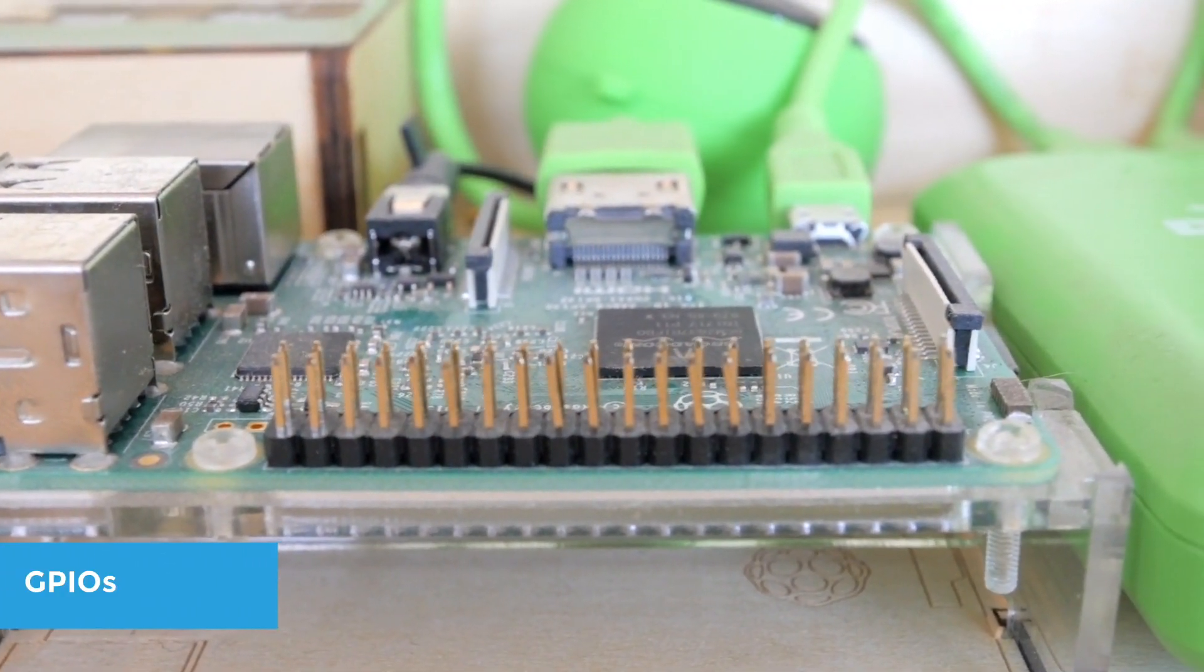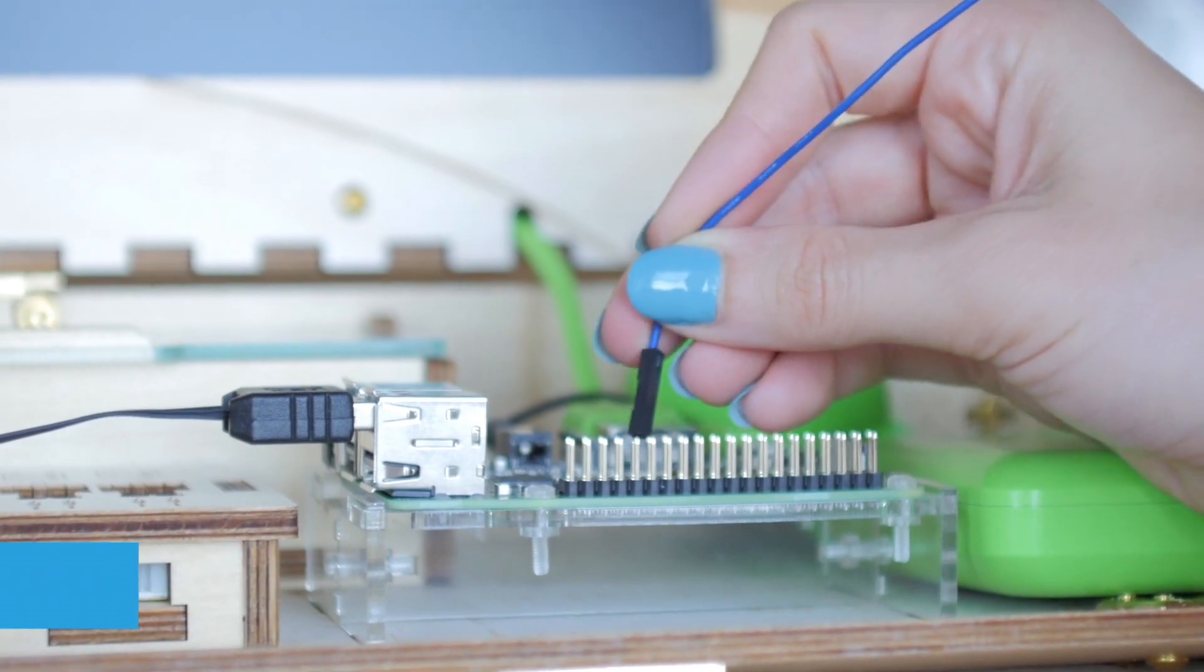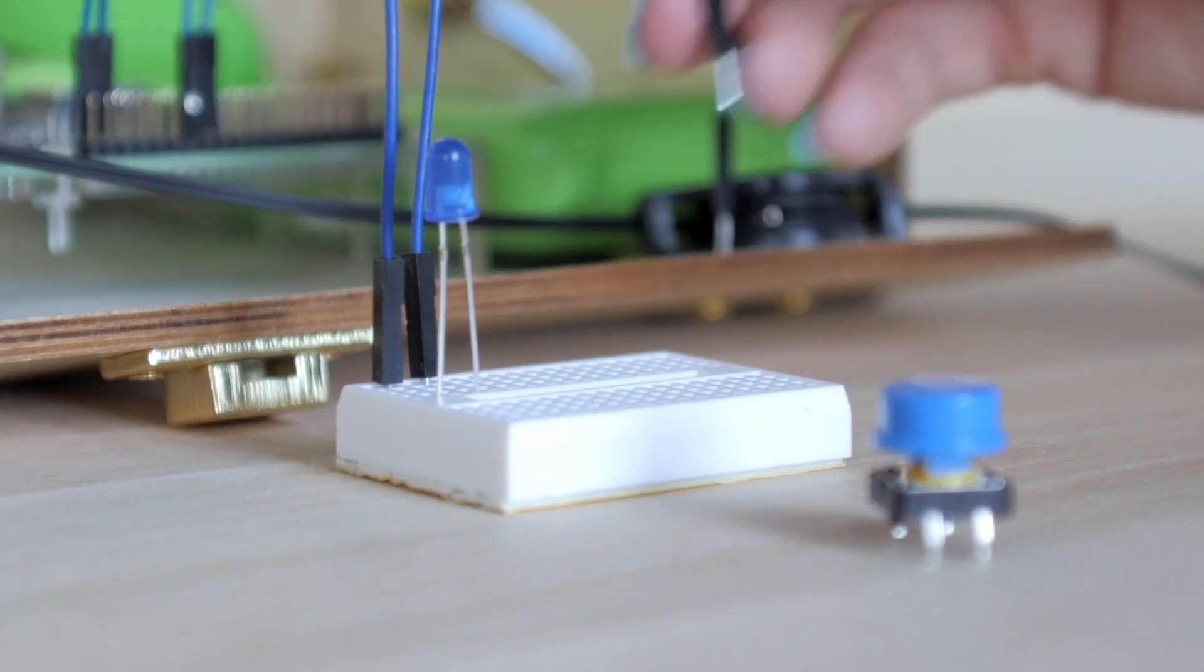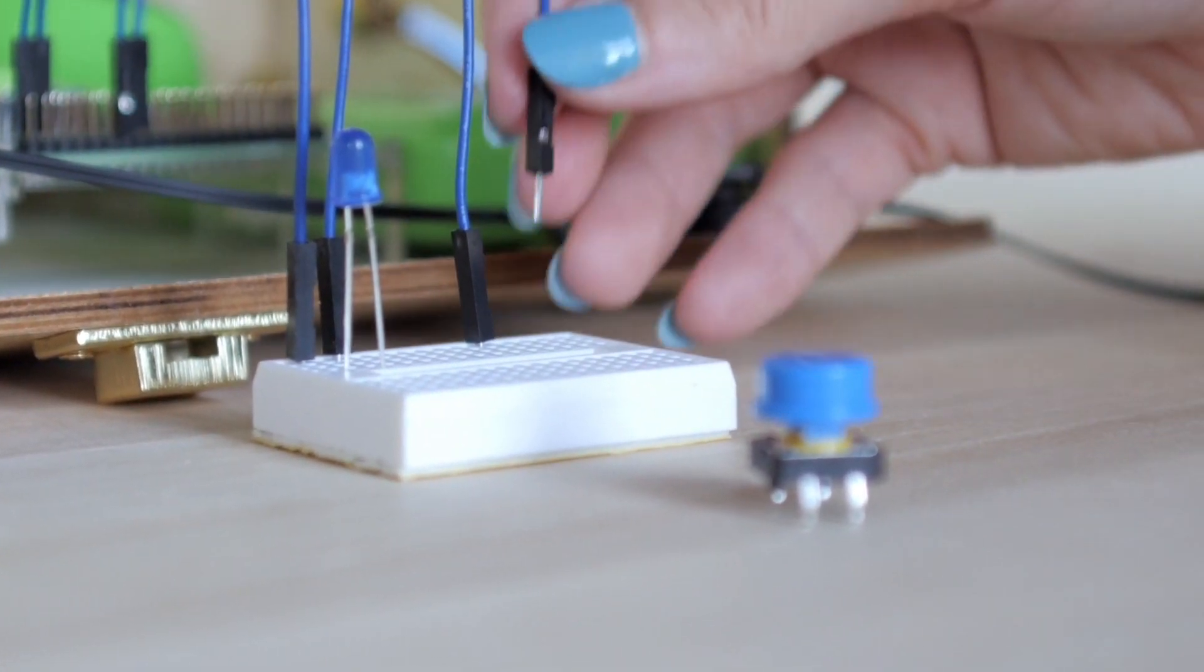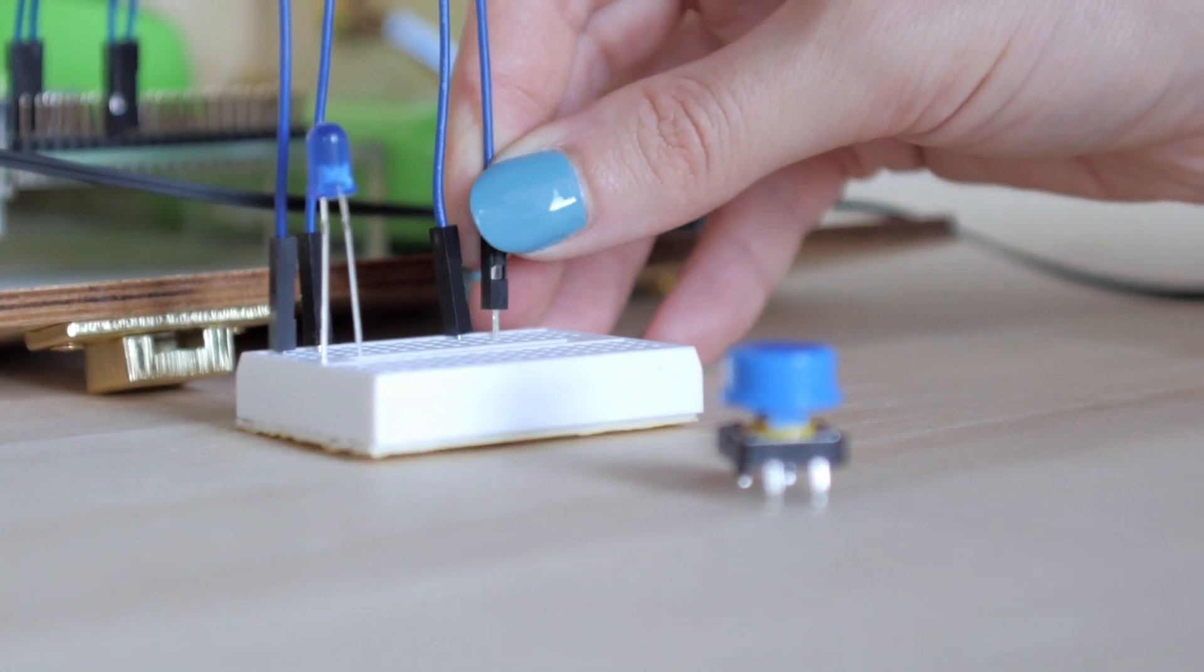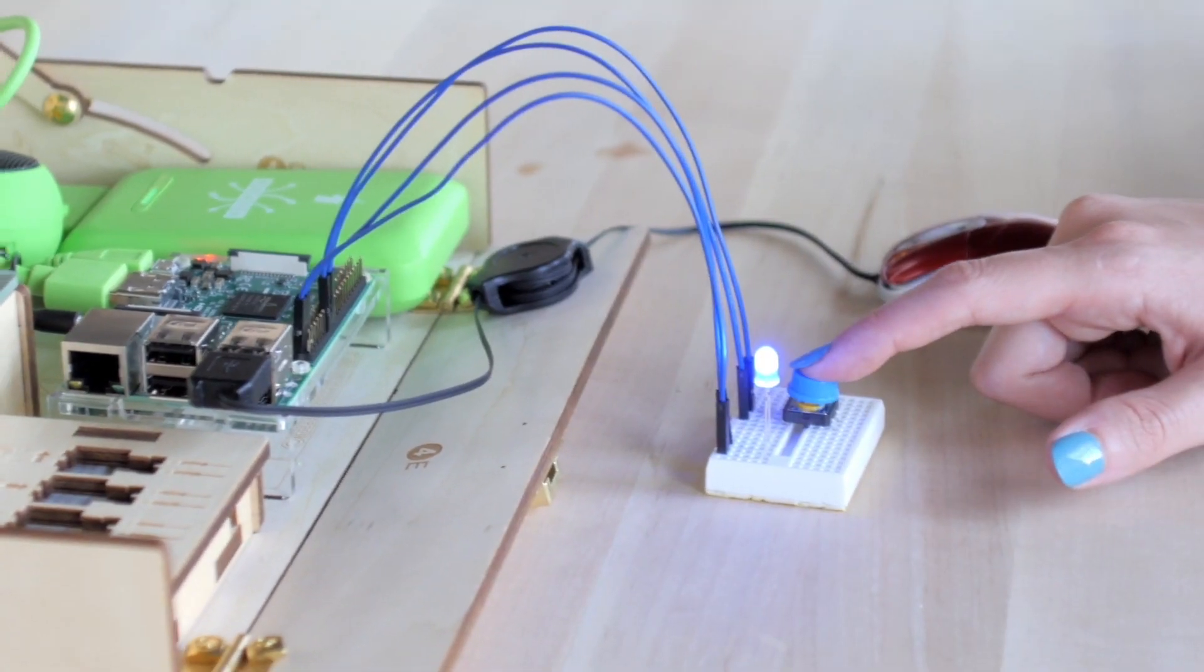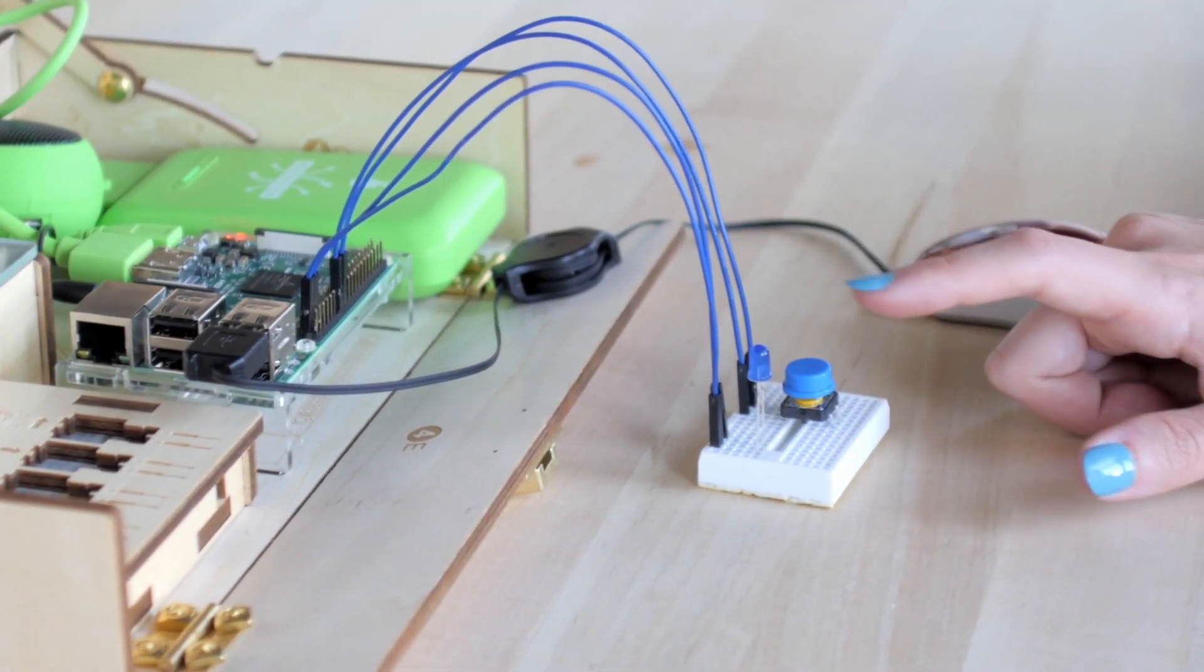GPIOs. These are general purpose inputs and outputs. These are pins that allow you and your students to communicate with the computer. For example, connecting a button and an LED allows you to program for the LED to turn on when the button is pressed.